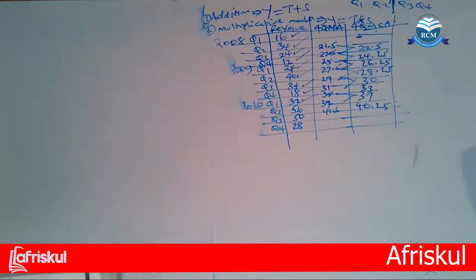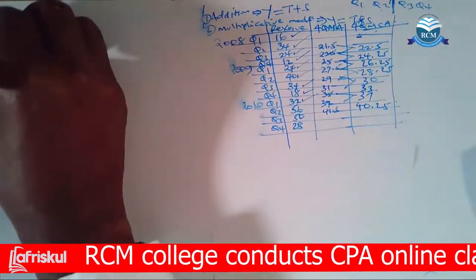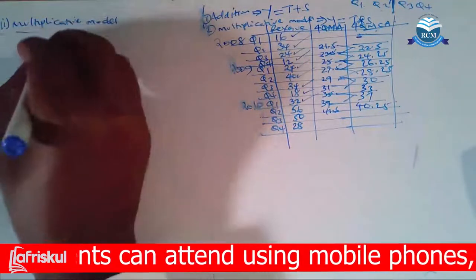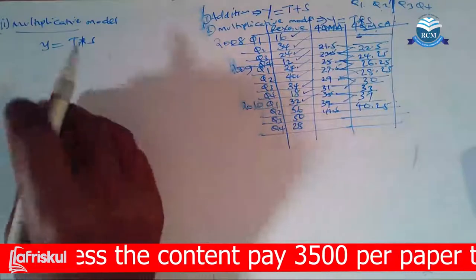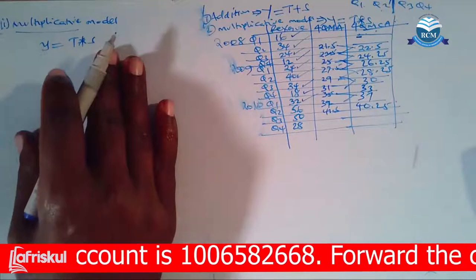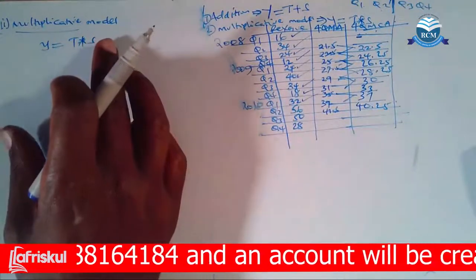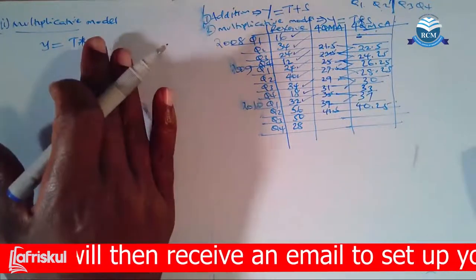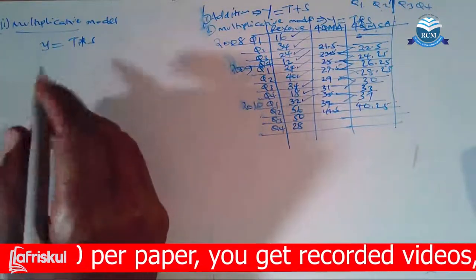Now remember, multiplicative model, ladies and gentlemen, we have Y being equal to T times S. Now remember that our time series has got four components. We have the trend, we have the seasons, we have the cyclical, and then we have the erratic variations. However, for our prediction purposes, we don't make use of cyclical, we don't capture erratic here. Why? Because they're unpredictable, you can't predict them very well. So we have these two only.